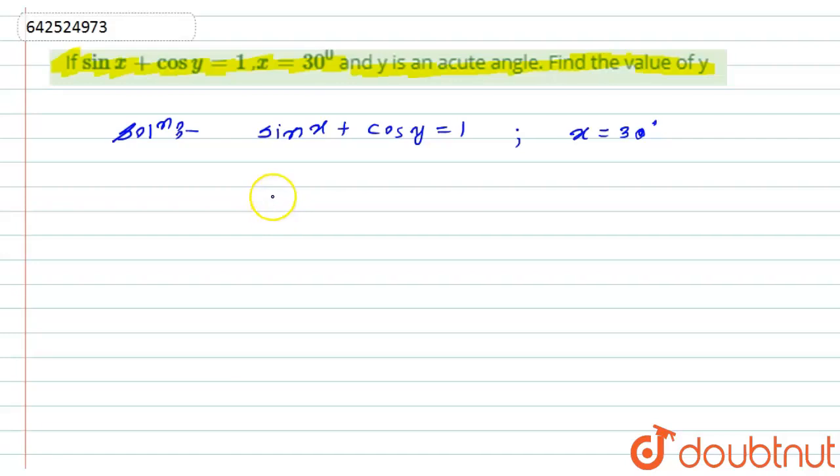So simply I will put in the place of x that value, that is 30 degrees. So the equation will become sin 30 degrees plus cos of y will be equal to 1.